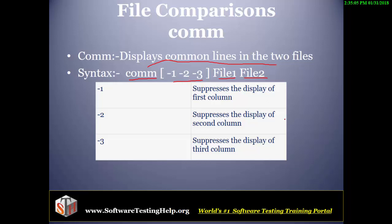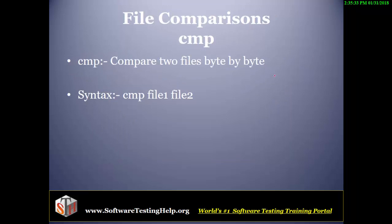If you use the switches: minus one will not display the first column — the first column is for the uncommon lines of file one. Minus two will not display the second column, which is the uncommon lines for file two. And the minus three option will not display the third column, which is the common lines found in both file one and file two.